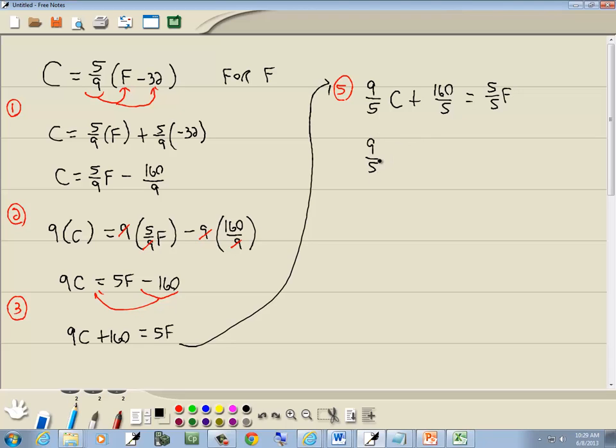So that gives us 9 fifths C plus 32 is equal to F. And that's our answer.